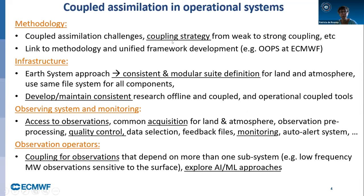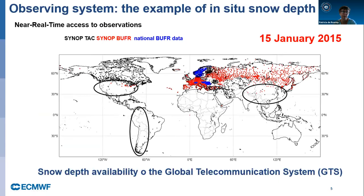I will illustrate some of these points. This illustrates the real-time access to observation challenges. This shows the in-situ observations that we had in real-time on the GTS, the Global Telecommunication System, on the 15th of January 2015. One date gives a good idea of what we have every day.